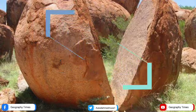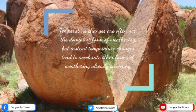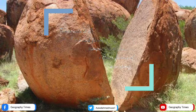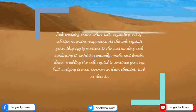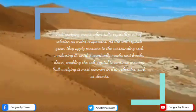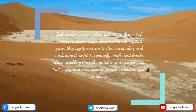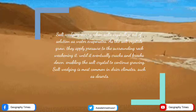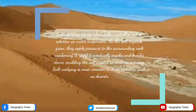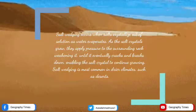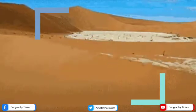Temperature changes are often not the dominant form of weathering, but instead tend to accelerate other forms of weathering already occurring. We also have salt wedging. Salt wedging occurs when salts crystallize out of solution as water evaporates. As the salt crystals grow, they apply pressure to the surrounding rock, weakening it until it eventually cracks and breaks down, enabling the salt crystal to continue growing. Salt wedging is most common in drier climates, such as deserts.